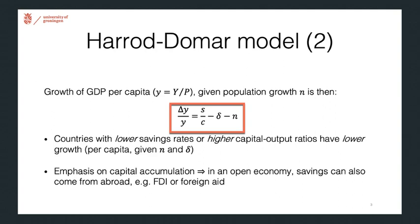But of course, this can also be extended. So if you are thinking about an open economy, then savings can come from abroad. So foreign direct investment or foreign aid would lead to faster growth in this model.